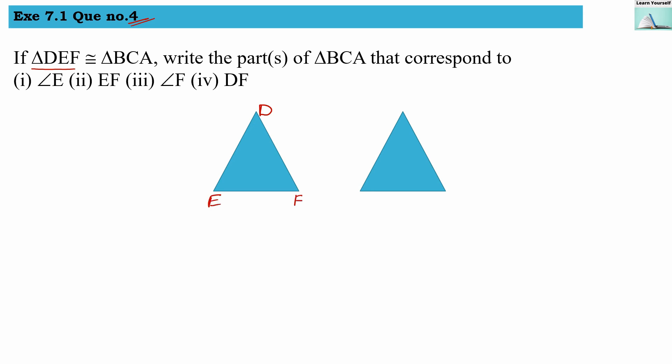We have discussed that you can write all names going anti-clockwise or clockwise, but follow the same direction for both triangles. If clockwise, then clockwise for both; if anti-clockwise, then anti-clockwise for both — otherwise the congruency will not match. Here I am following the anti-clockwise direction, so the second triangle is named B, then C, then A.